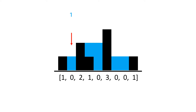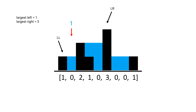It's easy for us to see that only one block of water will fit in the second position, but how can we algorithmically determine how much water each position holds? The key observation is that how much water a position can hold is determined by the minimum of the tallest bar to the left of the position and the tallest bar to the right of the position. For this position there is only one bar to the left so it is the highest with a height of one, and among the bars to the right the one at position six is the highest with a height of three. Taking the minimum gives us a height of one bar of water.